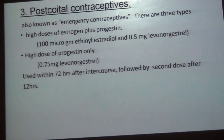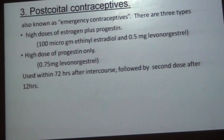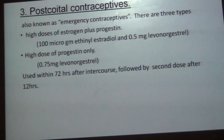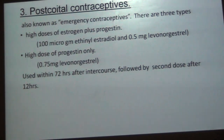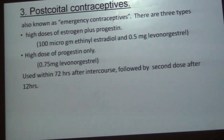Post-coital or emergency contraceptives are of three types. The first is high doses of estrogen plus progesterone — 100 micrograms of ethinyl estradiol and 0.5 mg of levonorgestrel. The second is high-dose progestin only — 0.75 mg of levonorgestrel used within 72 hours after intercourse, followed by a second dose after 12 hours. The third emergency drug is mifepristone.